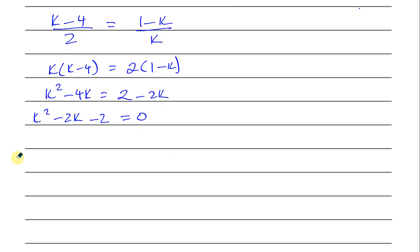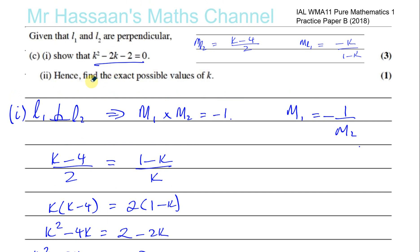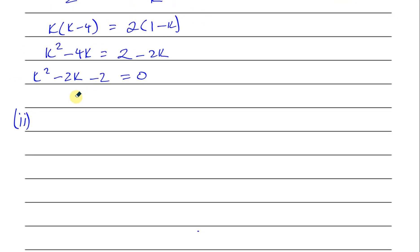Now C part 2, we're asked to solve this equation. It says hence, find the exact possible values of K. So basically they're asking us to solve this quadratic equation. And they're telling us that the answer is going to be in surd form. It won't give you exact whole number answers. And you have to give the answer in exact form without any rounding. So basically, when I solve an equation like this, you could use a quadratic formula or you could complete the square. I think I'm going to complete the square.